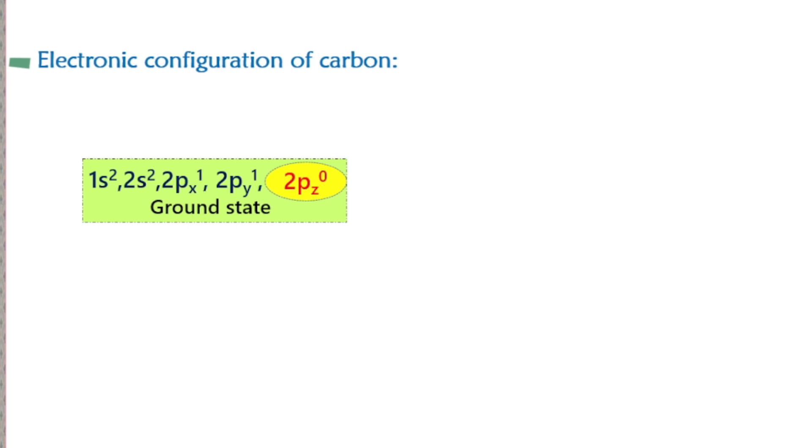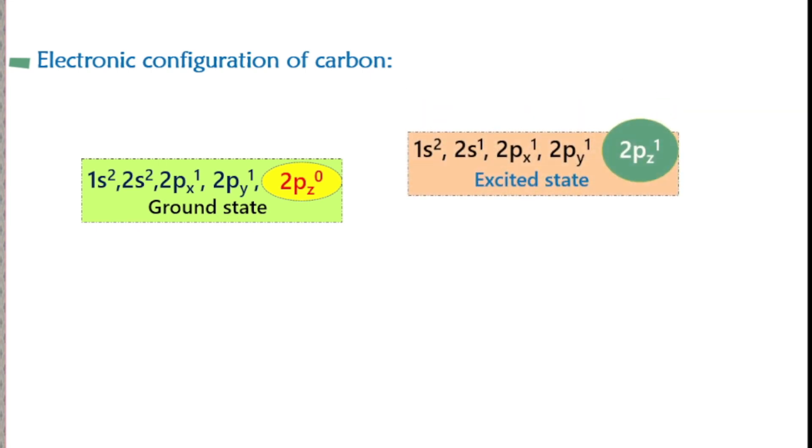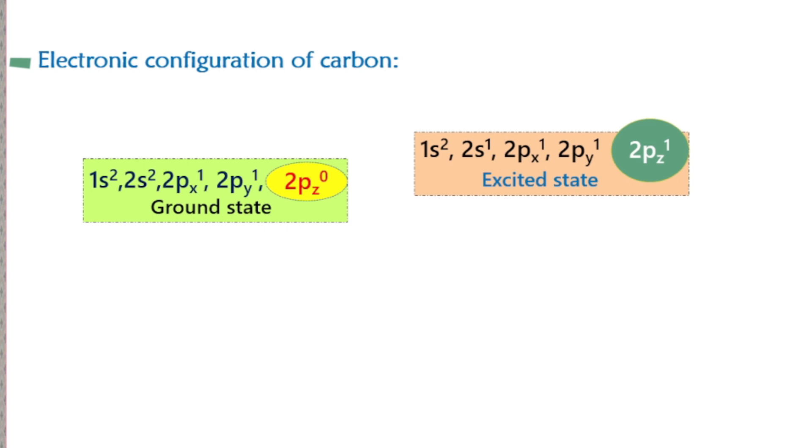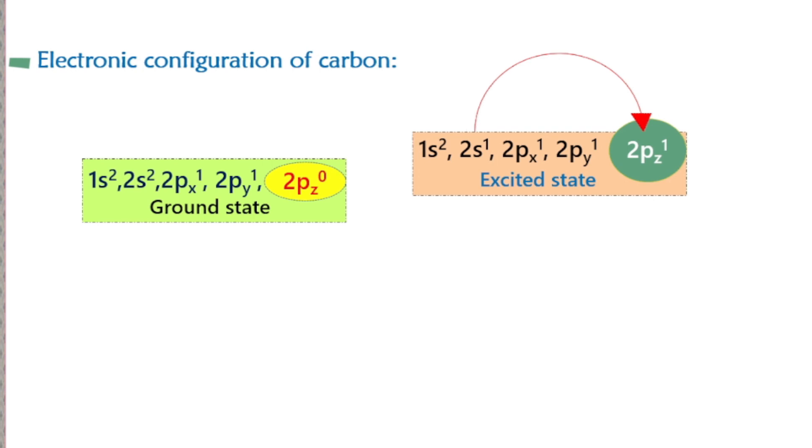Here is the excited state: 1s2, 2s1, 2px1, 2py1, and 2pz1. In the excited state, one electron from the 2s orbital is promoted to the 2pz orbital. In this way, the four valence orbitals combine together.